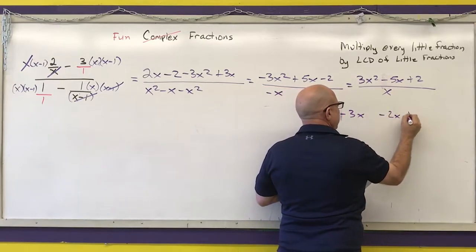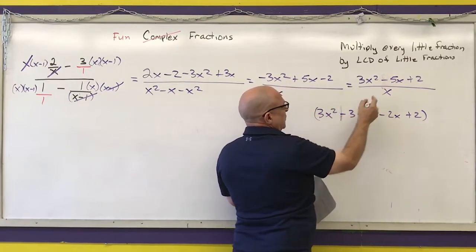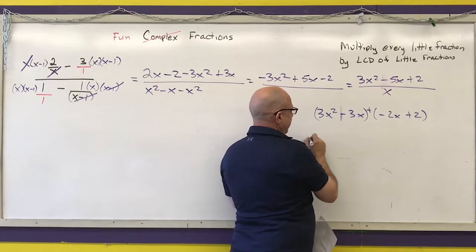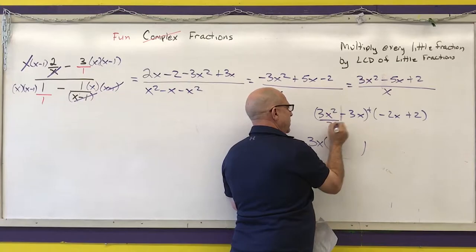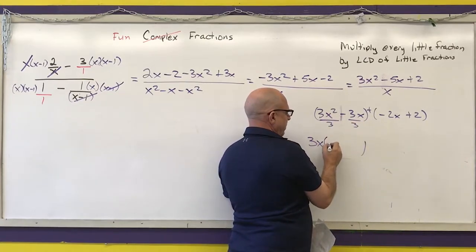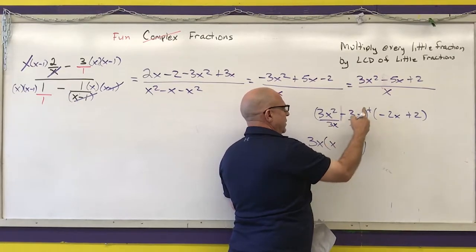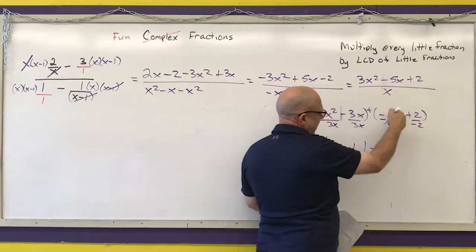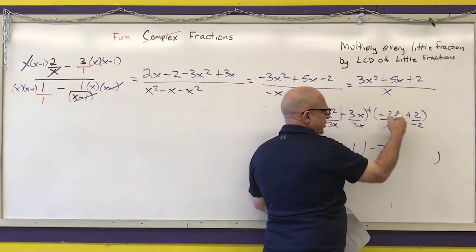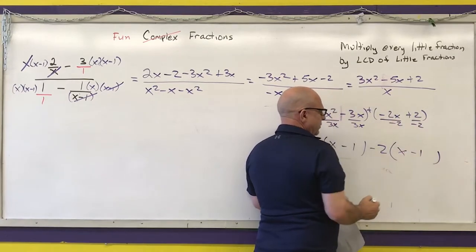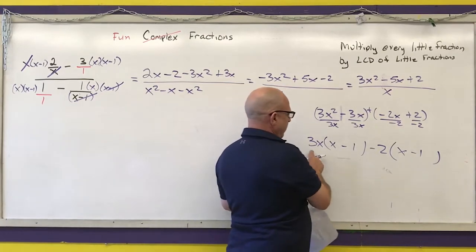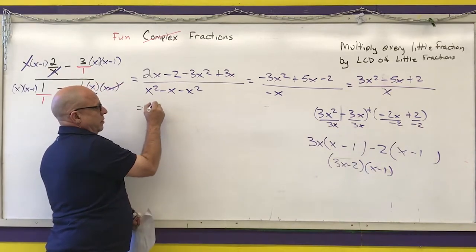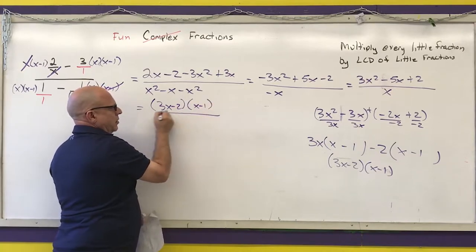Splitting the middle term: 3x squared minus 3x minus 2x plus 2. Put parentheses around the first two and the last two with a plus sign in between. The greatest common factor of the first group is 3x — dividing gives x minus 1. The GCF of the second group is negative 2 — dividing gives x minus 1. Since both factors match, the result is 3x minus 2 times x minus 1.